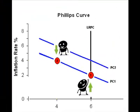Let's begin with the economy in the long run at the natural rate of unemployment at, say, 6%, shown as point 0.1. If policymakers use both fiscal and monetary policy to reduce the unemployment rate to 4%, resources become scarce and prices will rise to point 0.2.